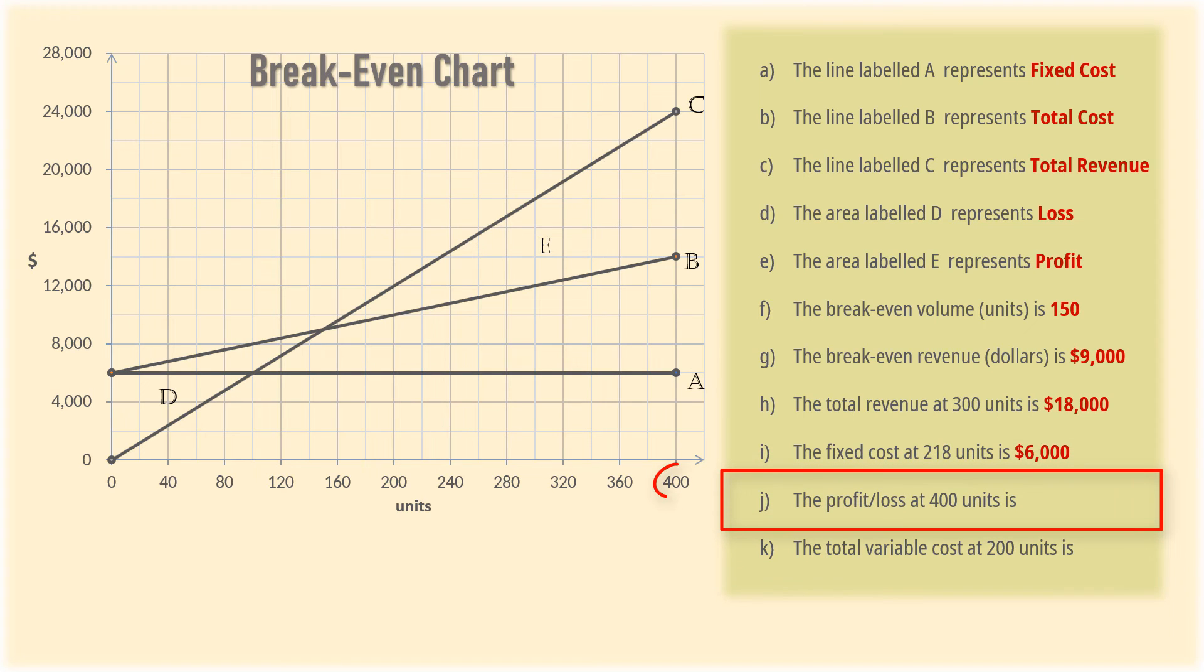For J, we need the profit or loss at 400 units. So, we take the total revenue there, which is $24,000, and subtract the total cost there, which is $14,000 from it. And that gives $10,000.